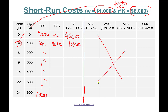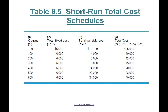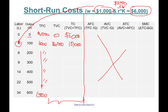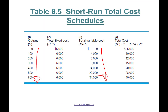Focus on the TVC and TC columns for now and ignore the other part. When you come back, you'll find that total variable cost goes up as output goes up, because higher output levels require more labor. Total fixed cost remains constant throughout.